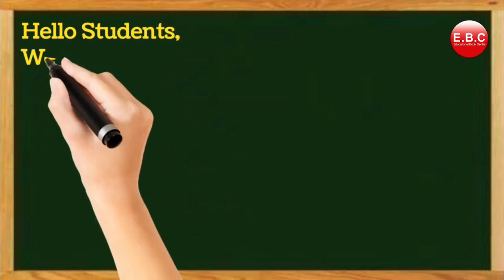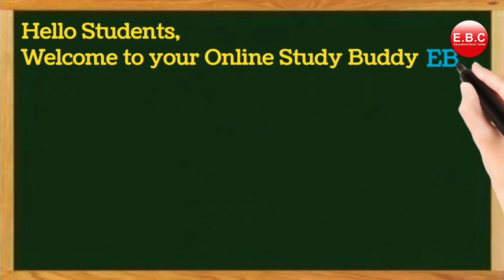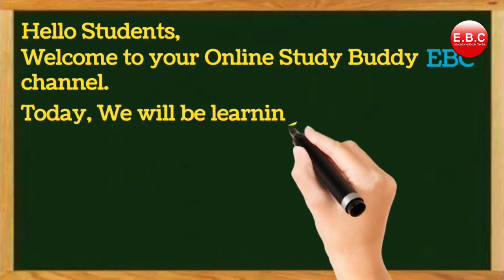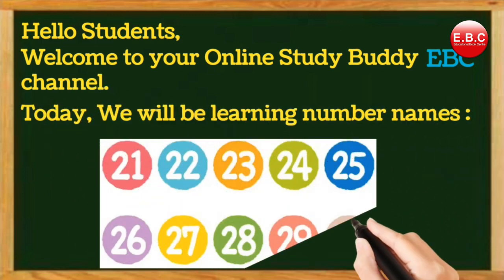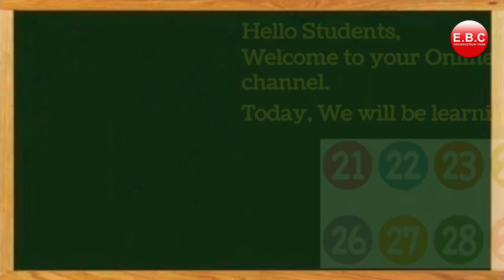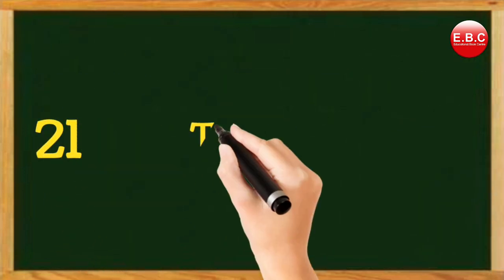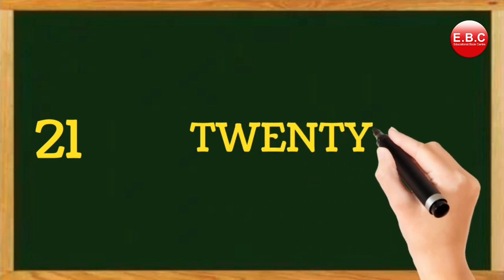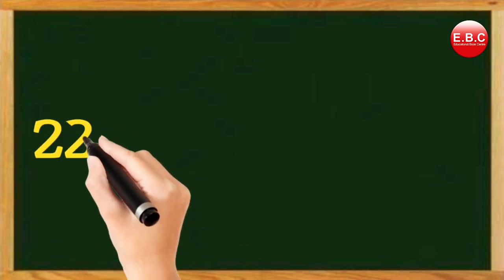Hello students, welcome to your online study buddy EBC channel. Today we will be learning number names from 21 to 30. Let's start. 21 — T-W-E-N-T-Y, twenty, O-N-E, one. 21.